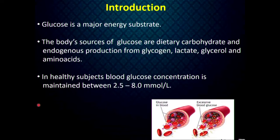Glucose is a major energy substrate in our body. Our body gets glucose from dietary carbohydrates as well as produced endogenously from glycogen, lactate, glycerol and amino acids. In a healthy subject, blood glucose concentration is maintained between 2.5 to 8 millimoles per liter.